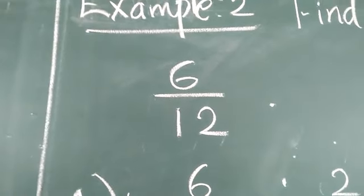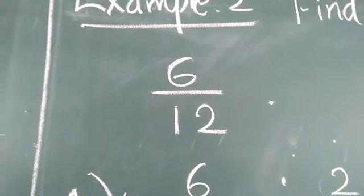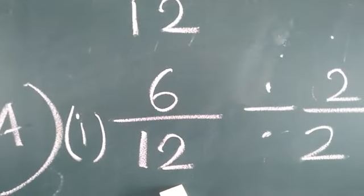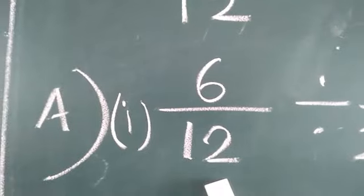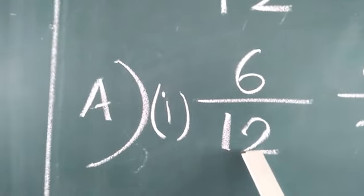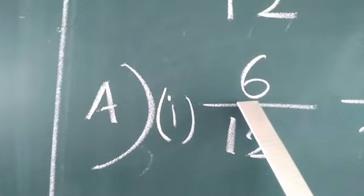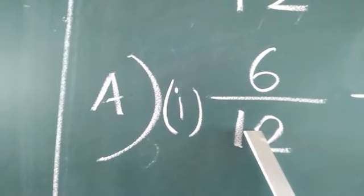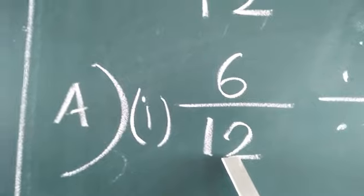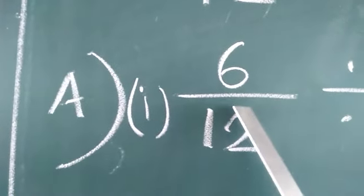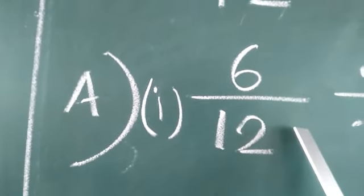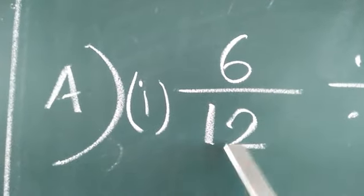Remember, here we are going to divide the given fraction 6 by 12. Before doing the division, we must remember which are the common factors of 6 and 12, because we can divide these two numbers only by a common factor. The factors of 6 are 1, 2, 3, and 6. We can choose any common factor.